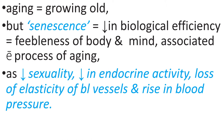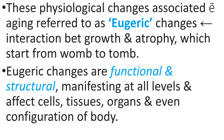Changes associated with aging include decreased sexual processes, decrease in endocrine activity, loss of elasticity of blood vessels, and rise in blood pressure. These physiological changes associated with aging are referred to as eugeric changes, due to the interaction between growth and atrophy which starts from womb to tomb. Eugeric changes are functional and structural, manifesting at all levels and affecting cells, tissues, organs, and even the configuration of the body.